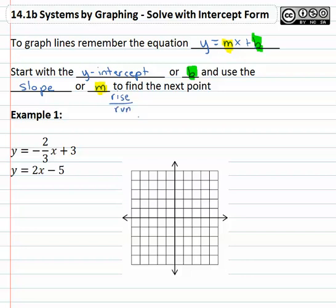So if we're given two equations, y equals negative two-thirds x plus three and y equals two x minus five, we're asked to find the solution for x and y that makes not just one, but both of these equations a true equation.